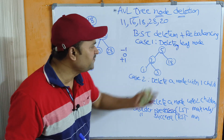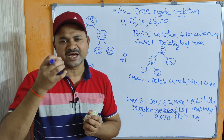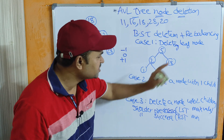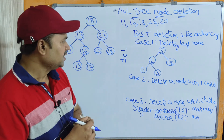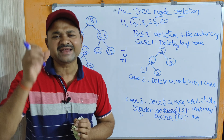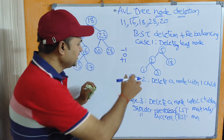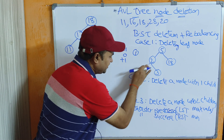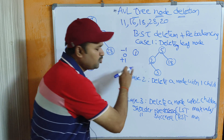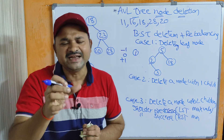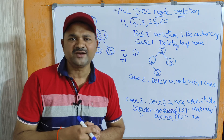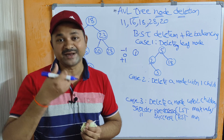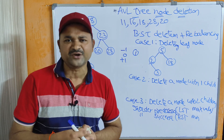Case 1: deleting a leaf node. A leaf node means a node with no children. Here nodes 1, 3, and 18 are called leaf nodes. If we want to delete a leaf node then we can directly delete that node. After doing the deletion operation we have to calculate the balance factor, and if any node is unbalanced we have to rebalance the tree by performing the corresponding rotation.